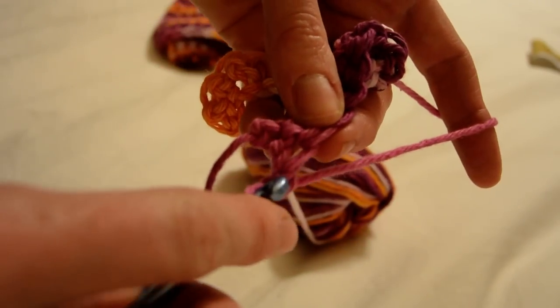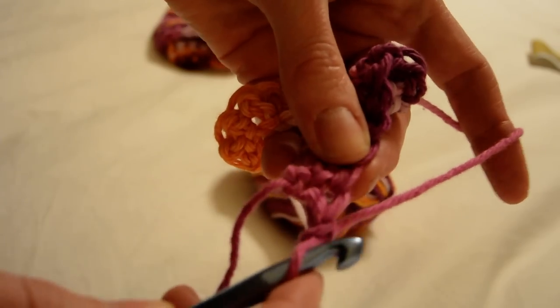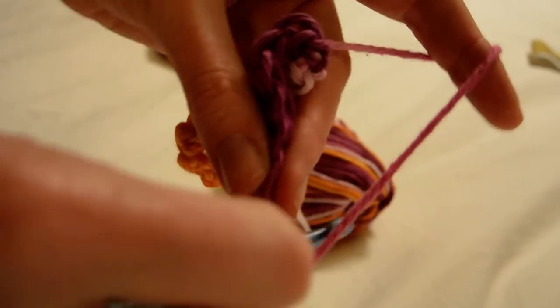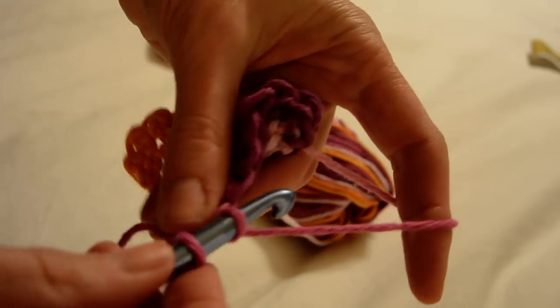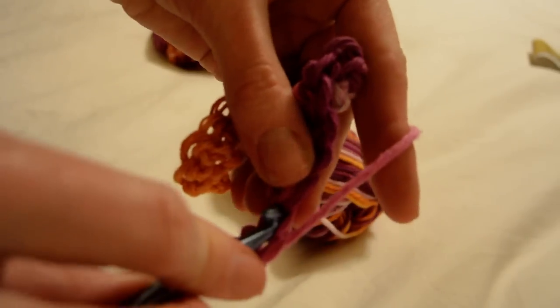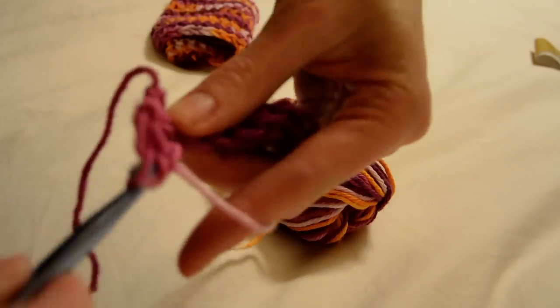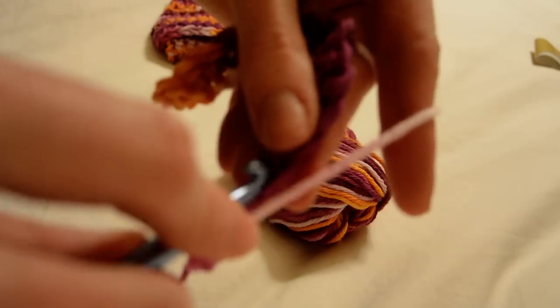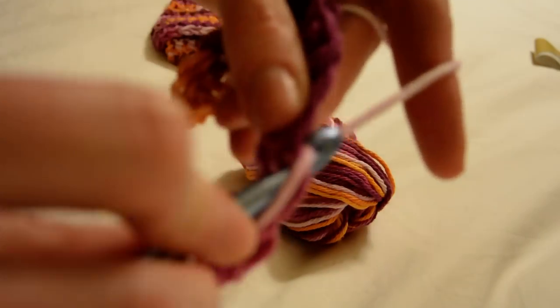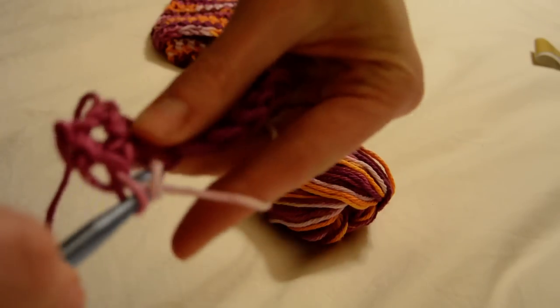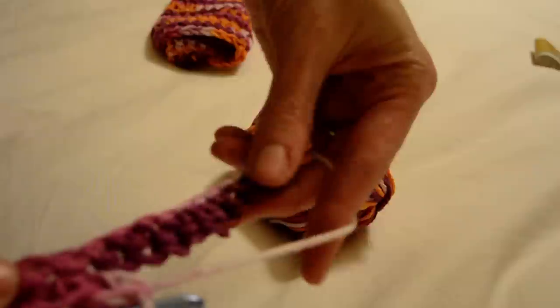I can't go in this very first stitch because that's where my yarn goes, but I'm going to go through the second one and do my single crochet. Just keep going. When you come to the end of that row, you do the same thing. You chain one and turn.